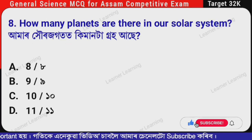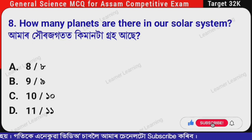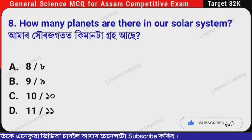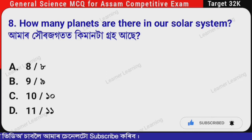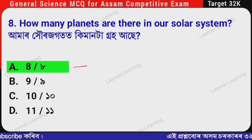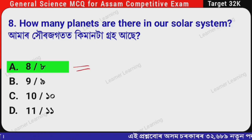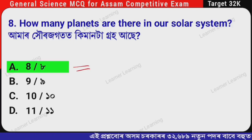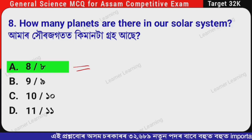Next question: How many planets are there in our solar system? (Assamese: Amar horos agotot kee mannta groh hova se?) The correct option is Option A — 8. There are 8 planets in our solar system. Remember this.